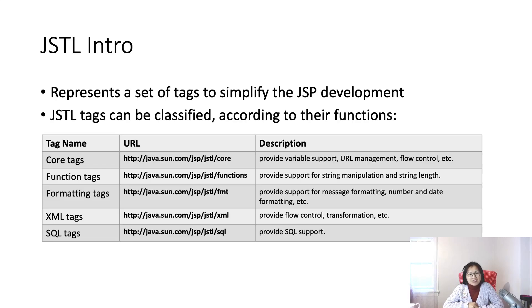JSTL represents a set of tags to simplify JSP development. In the last video, I showed a demo where we used scriptlets to do a loop over a person and also had to do if-else conditions. When using JSTL, we can use the core tags to do exactly the same thing. You can think of JSTL tags as predefined HTML-like tags.